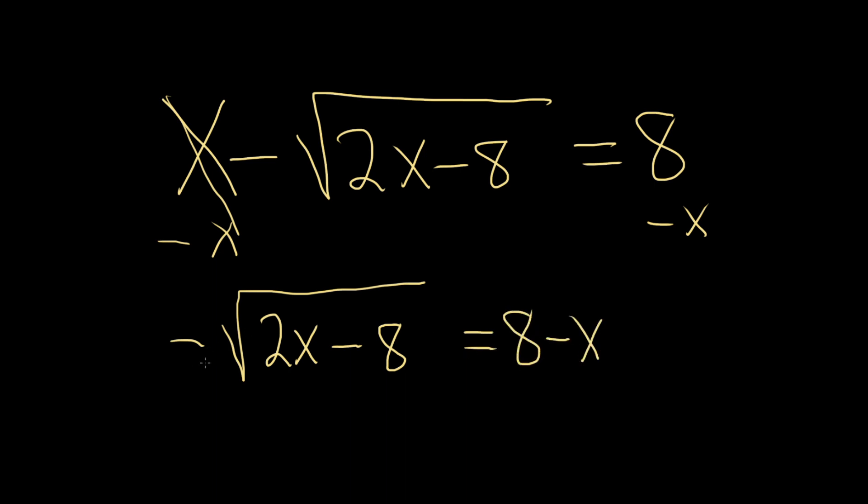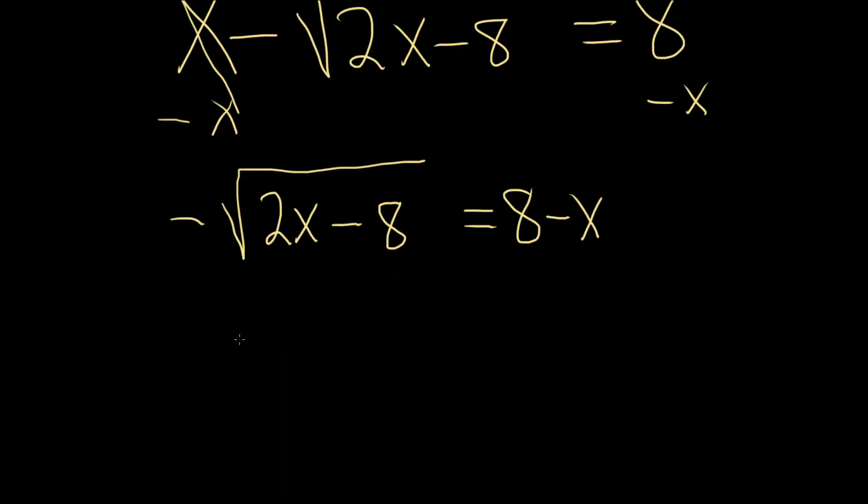Now this negative sign is kind of annoying, so what we can do is we can multiply both sides by negative 1. Negative and negative is positive, so we just get the square root of 2x minus 8. And then on the right-hand side, we can distribute the negative 1. Negative 1 times negative x is going to make it a positive x, and negative 1 times positive 8 is going to make it minus 8.